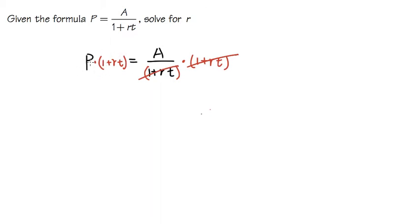We have the P in front of this parenthesis. I'm going to distribute the P into the parenthesis. So P times 1 is P, and then P times rt. We'll just write down plus Prt.